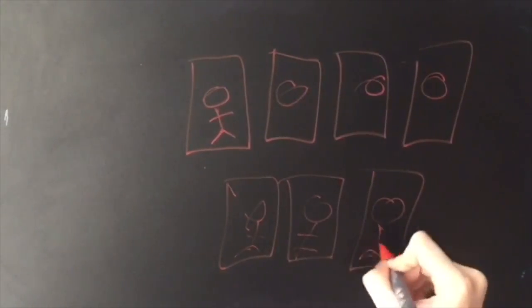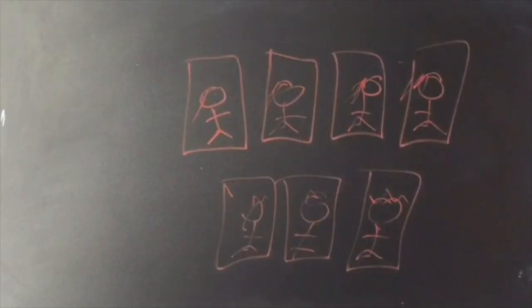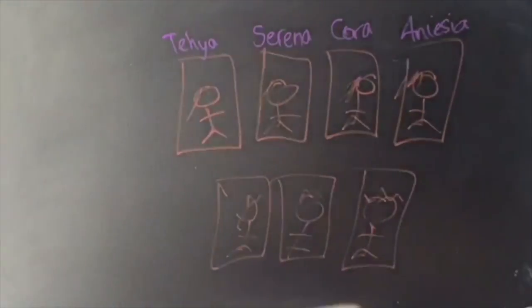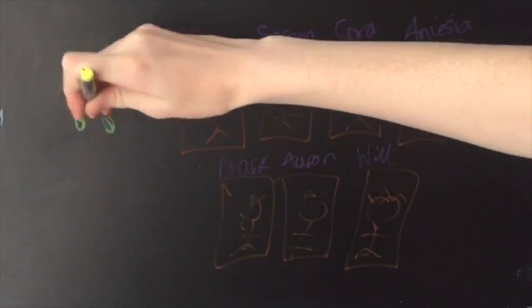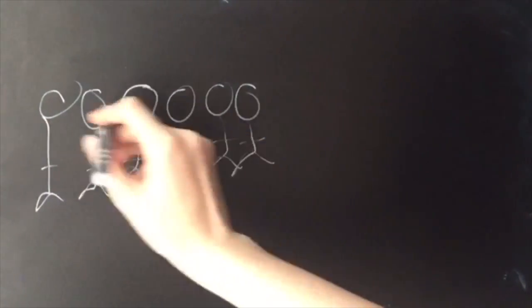And then I made a bunch of internet friends. I don't know why I drew boxes but you know. I made one called Taya, Serena, Cora, Anesia and then Mark, Aaron and Will. I also met Taya and Mark, Aaron and Will earlier this year which was amazing.